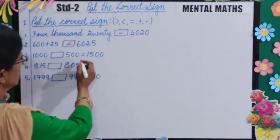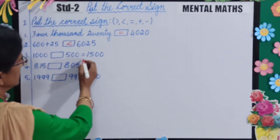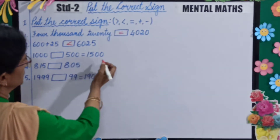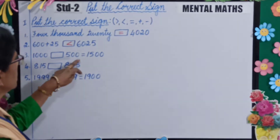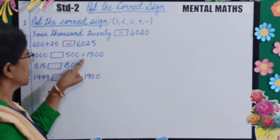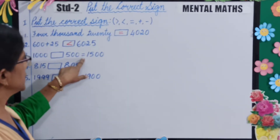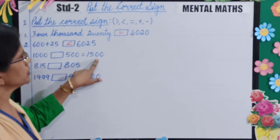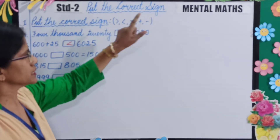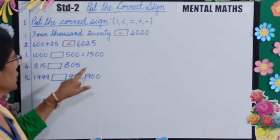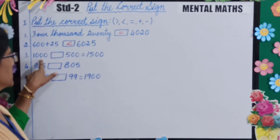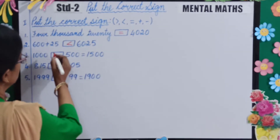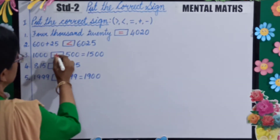1000 dash 500 is equal to 1500. So which sign will you put, children? When the equal to sign is given and an answer is provided, you have to put either a plus or minus sign. You will compare the two numbers — if the answer is greater, that means you will put the plus sign.